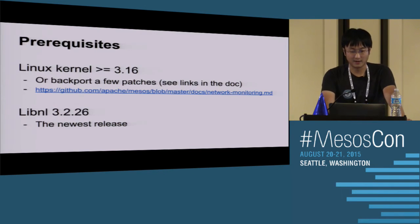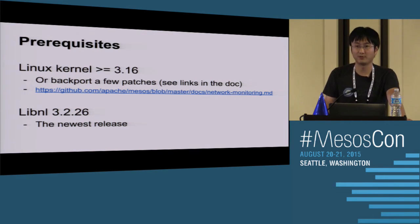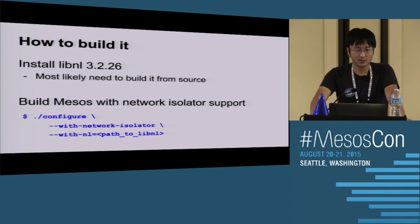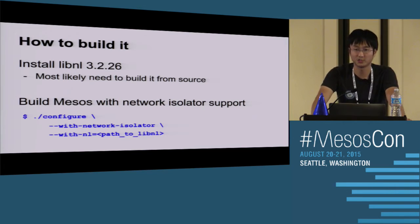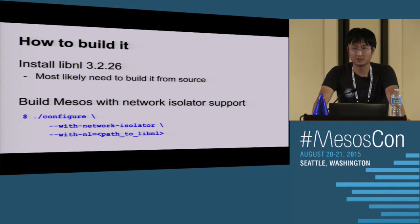Deployment is not as easy as other isolators. The requirements are: you must use kernel version 3.16 or greater. If you want to use an older kernel, you need to backport a few patches - that list is in the user documentation. You also need to use the latest libnl release 3.2.26. Those are the only two requirements. To build it, install libnl, likely from source since most Linux distributions don't have the latest release. When configuring and building MESOS, specify '--with-network-isolator' and '--with-libnl' pointing to your installed libnl. Note that the network isolator is not built by default.